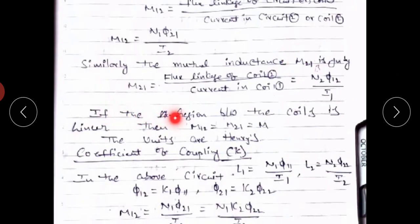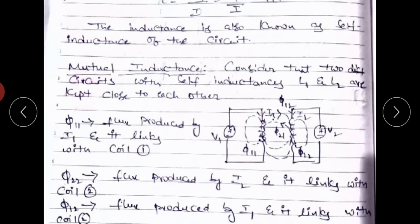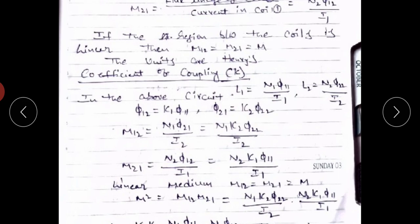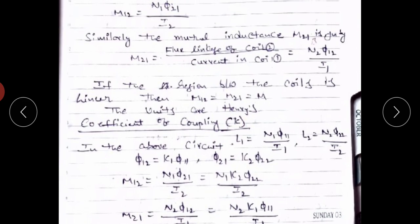If the region between the two coils is linear — that is, if the two coils are in a linear medium — then M12 equals M21, both equal to M. The units of mutual inductance are Henrys.